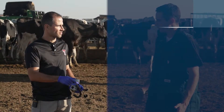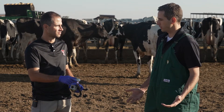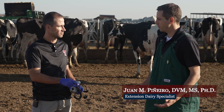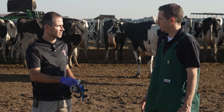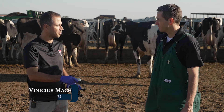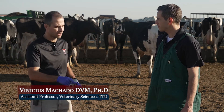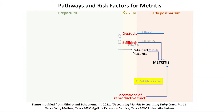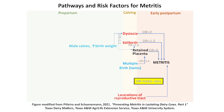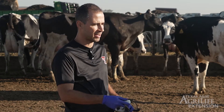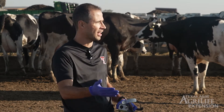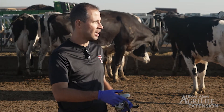If we can control some risk factors, we can reduce metritis. Classically, risk factors include calving-related problems such as dystocia, stillbirth, and retained placenta. Cows that give birth to male calves are also more likely to develop uterine diseases. Hygiene in the maternity pen and even how the perineal region of the cow looks are also risk factors — the dirtier the cow, the more likely she is to develop metritis.